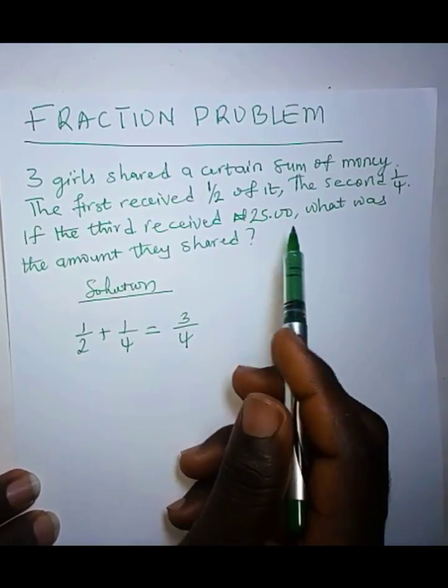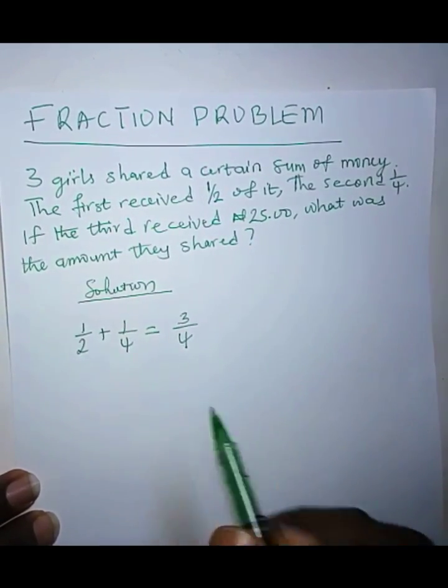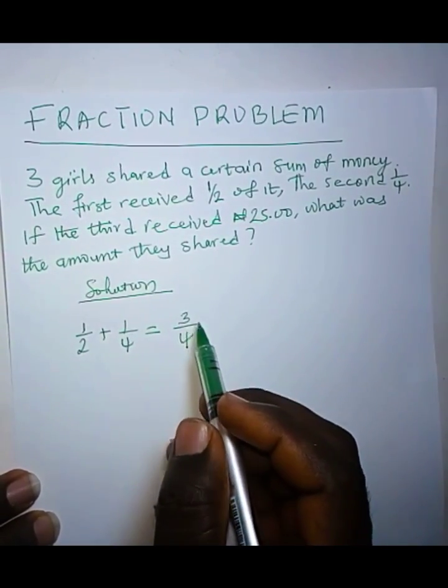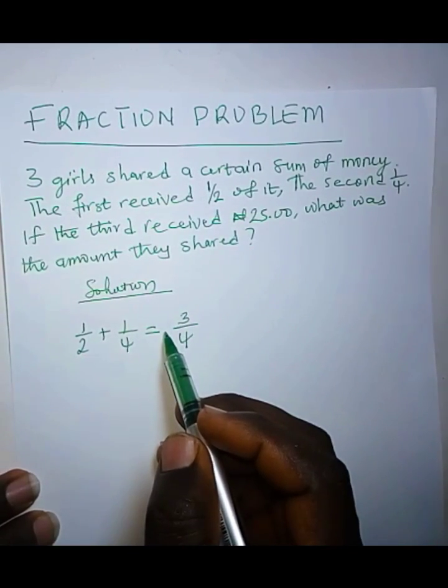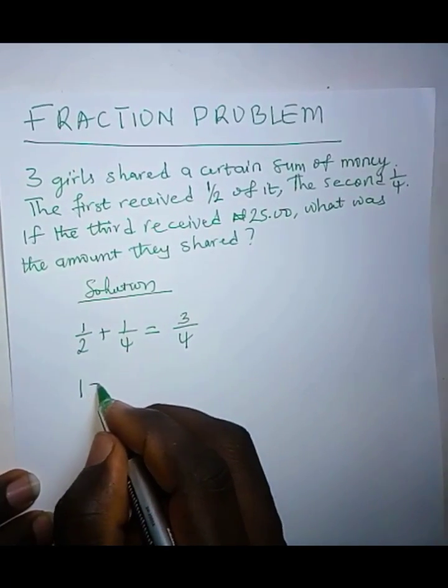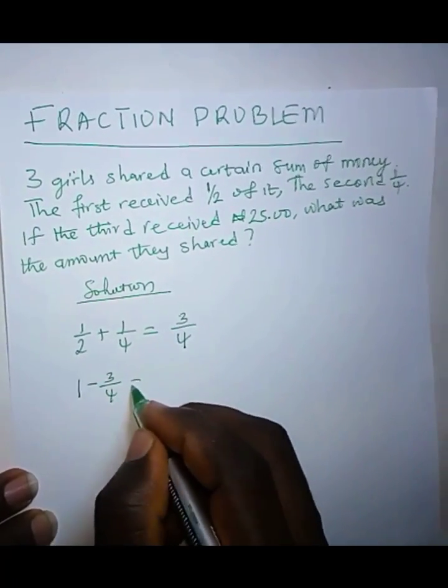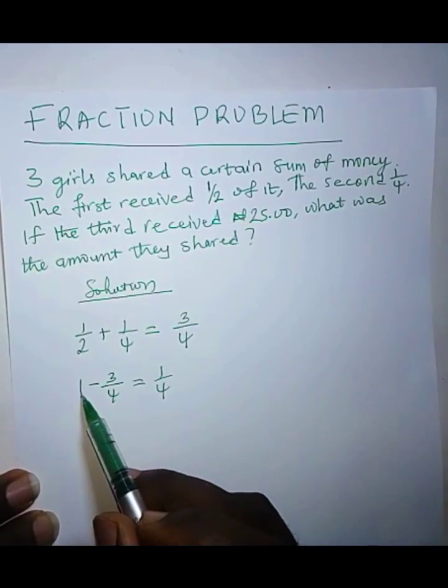And the remaining part, if 3 over 4 is one part, then the remaining part should be 1 minus 3 over 4, which is 1 over 4. So 1 minus 3 over 4 is 1 over 4.